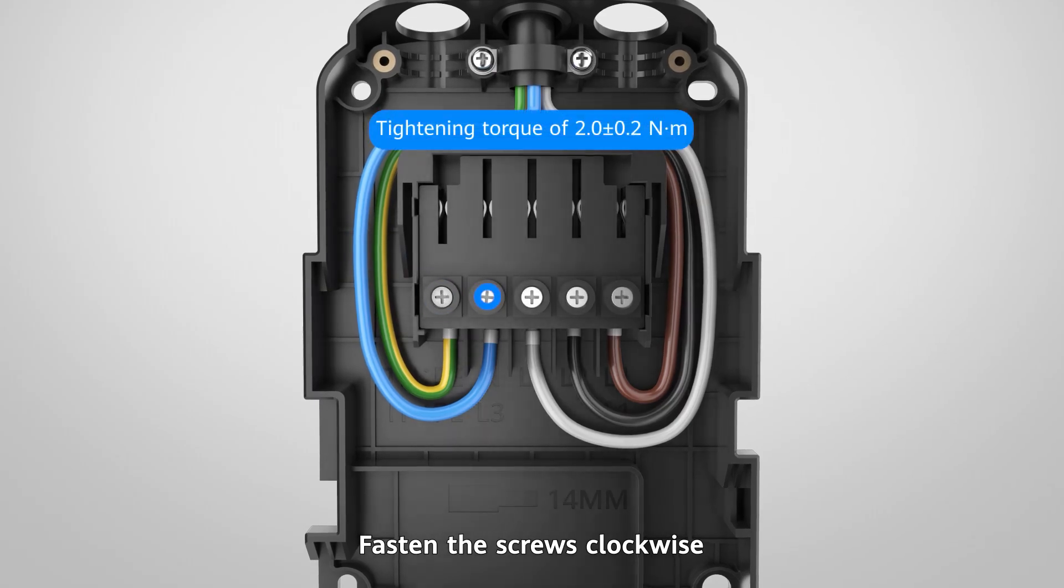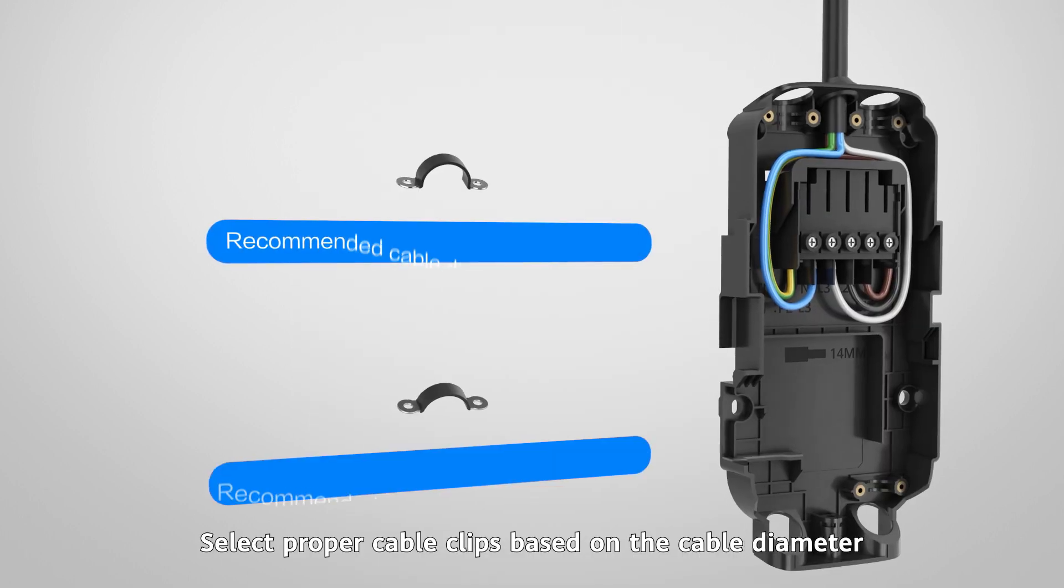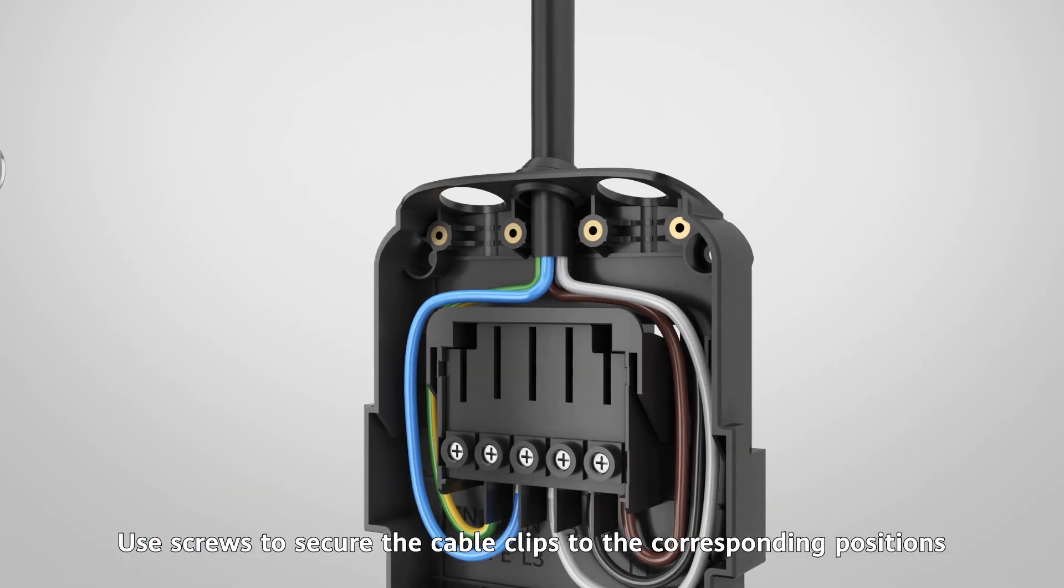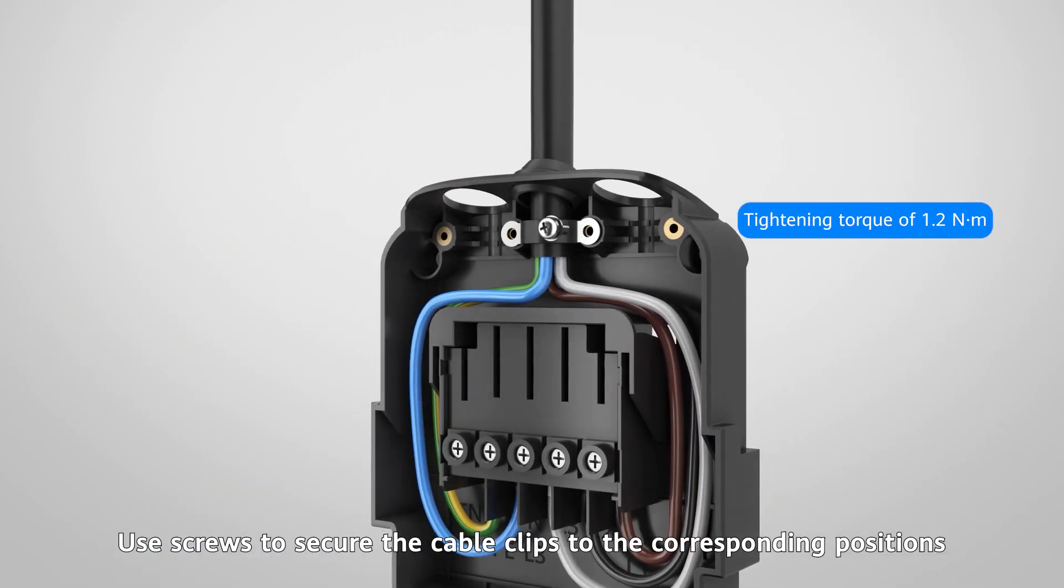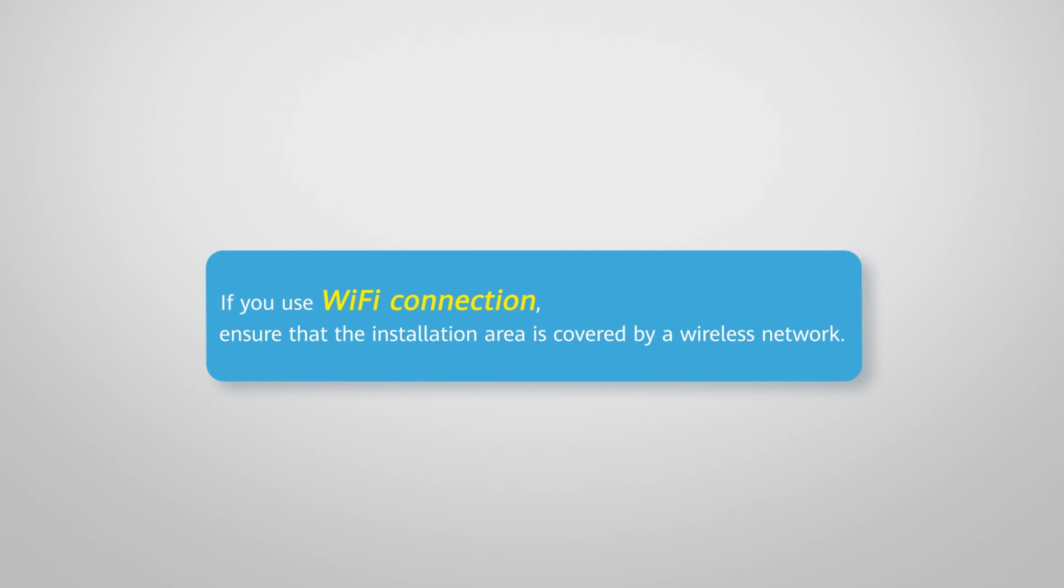Fasten the screws clockwise. Select the proper cable clips based on the cable diameter. Use screws to secure the cable clips to the corresponding positions on the rear cover. If you use Wi-Fi connection, ensure that the installation area is covered by a wireless network.